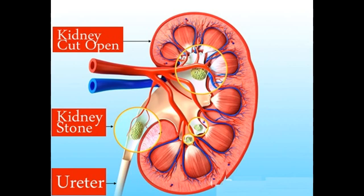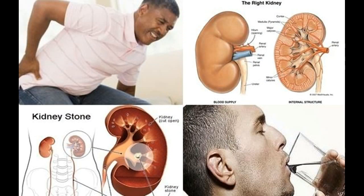Other causes of kidney stones are hyperuricocuria, which is a disorder of uric acid metabolism, gout, excess intake of vitamin D, urinary tract infections, and blockage of the urinary tract. Certain diuretics, commonly called water pills, and calcium-based antacids may increase the risk of forming kidney stones by increasing the amount of calcium in the urine. Calcium oxalate stones may also form in people who have chronic inflammation of the bowel, or who have had an intestinal bypass or ostomy surgery. People who take the protease inhibitor indinavir, a medicine used to treat HIV infection, may also be at increased risk of developing kidney stones.